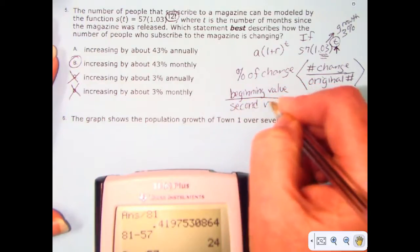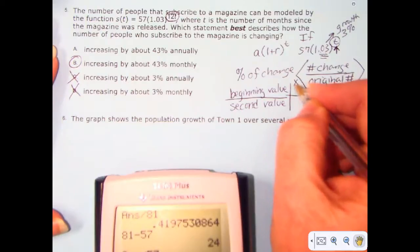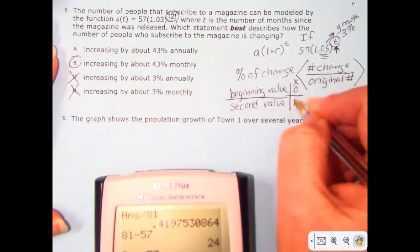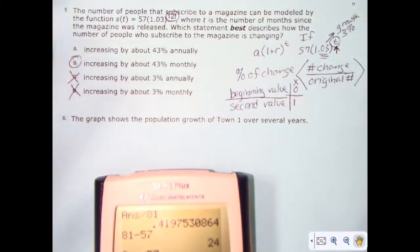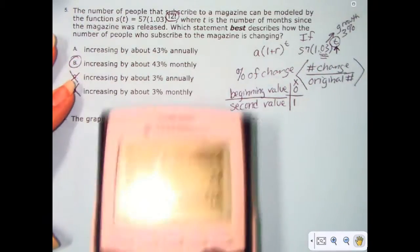The beginning value and then the second value. For the beginning value, make T or X or whatever it is equals zero. For the second value, make it equal one. Or pick any two. Pick like two and three. Pick whatever you want, but look for a difference and then divide that number by the original.